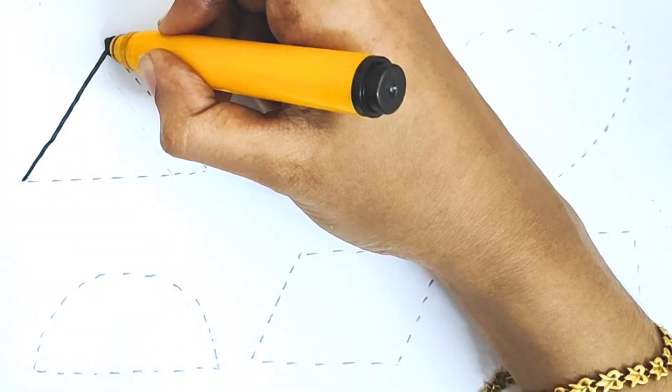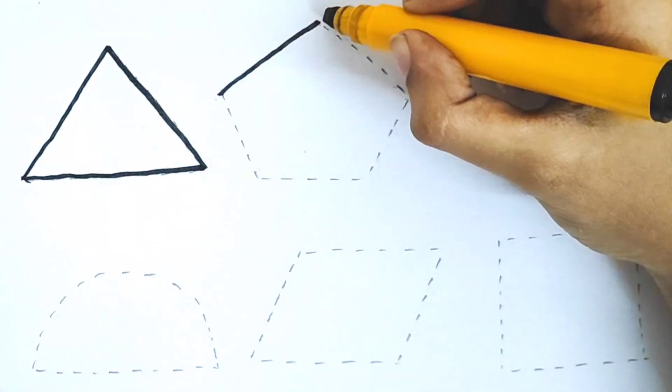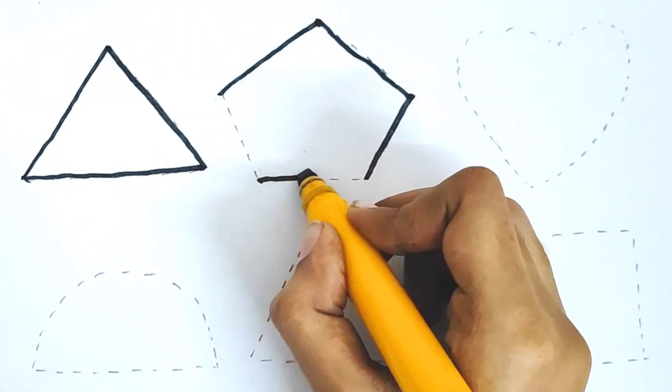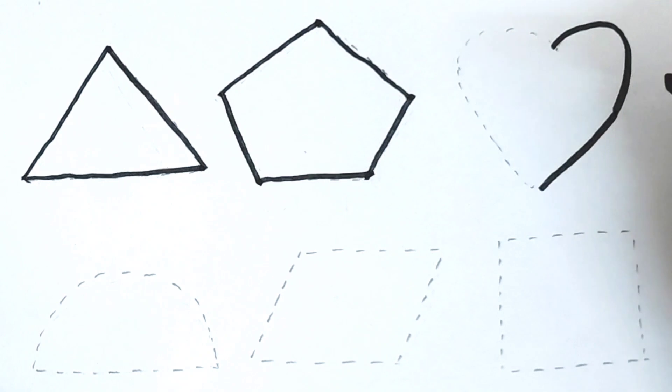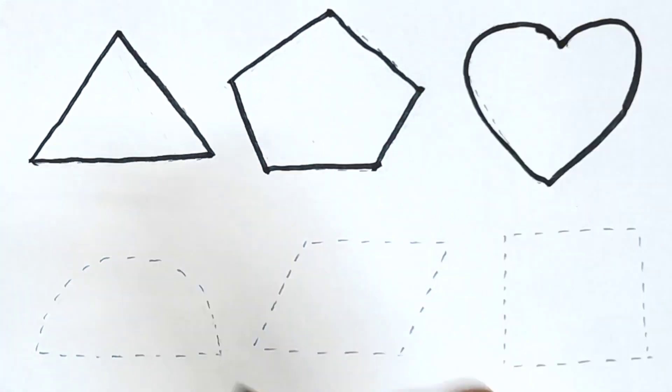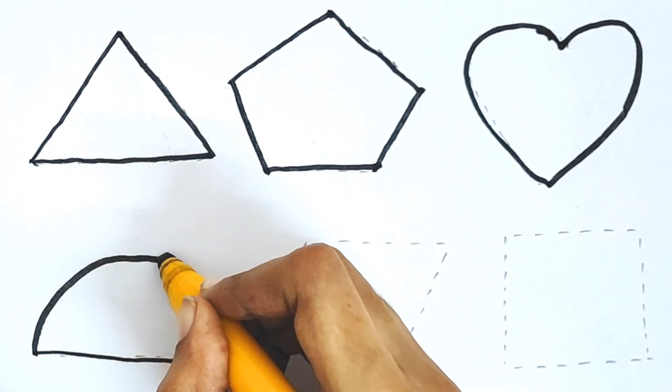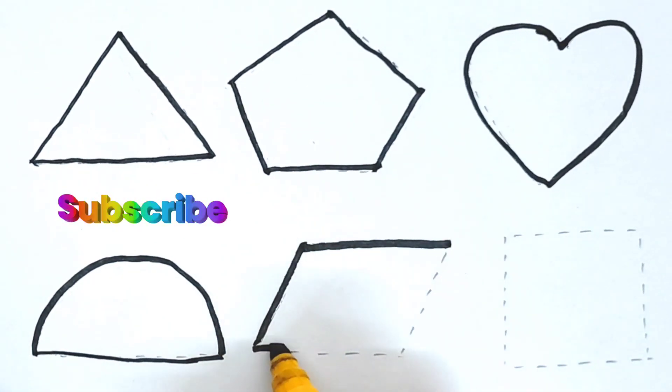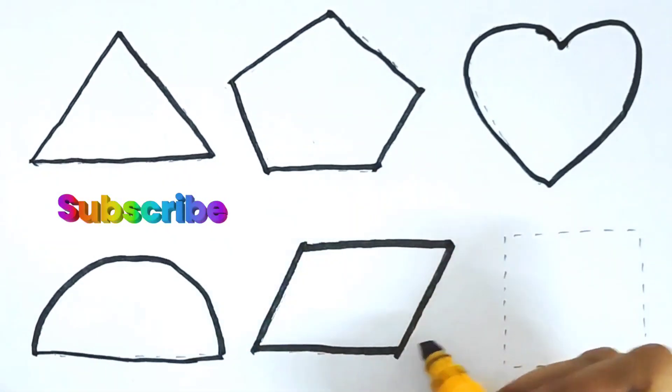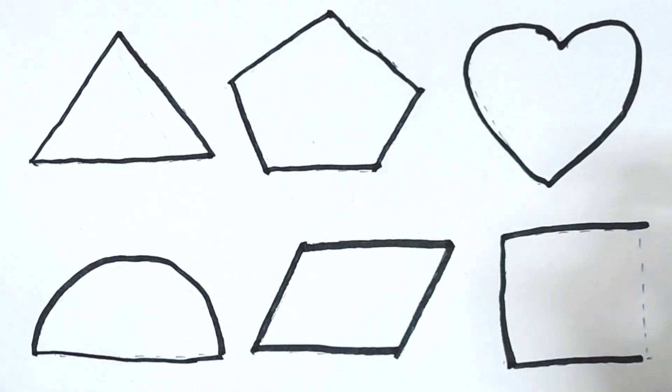Hello, today we are going to learn the shapes: triangle, pentagon, heart shape, semicircle, rhombus shape, and square shape.